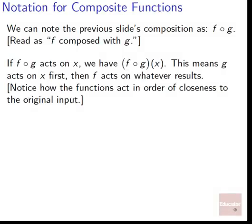We note the previous composition — when it went into g first and then into f — as f composed with g. This is written with a little circle between them: f circle g, read as 'f composed with g.' If f composed with g acts on some input x, we have f composed with g of x. We've created a new function by linking those two machines together — effectively one larger machine doing a new way of working. This machine, f composed with g, means g will act on x first, and then f will act on whatever results.